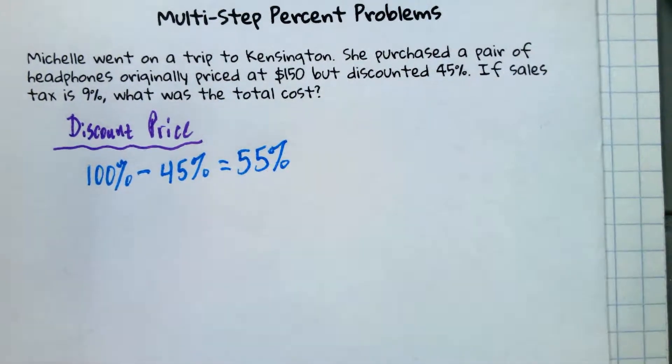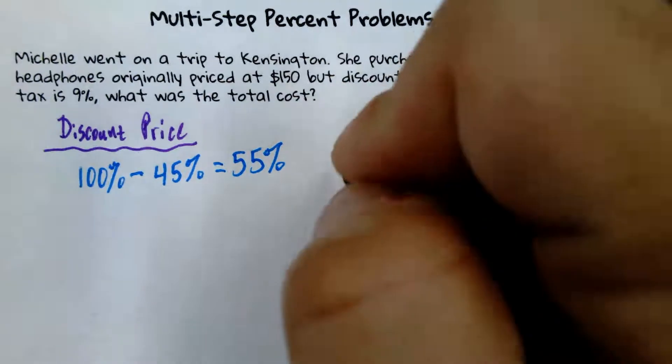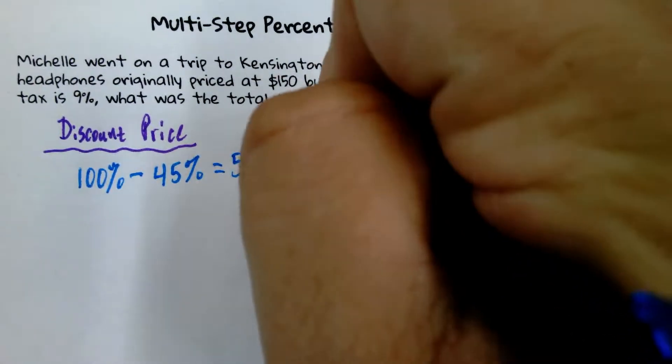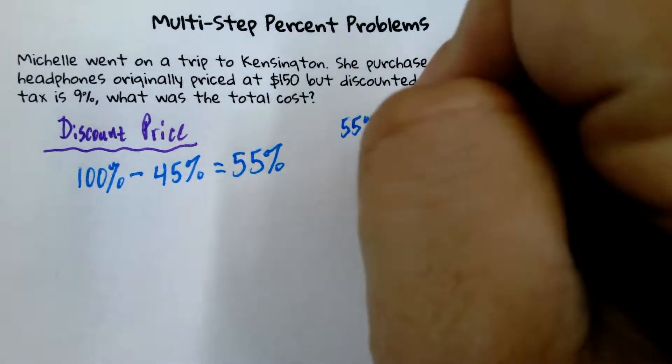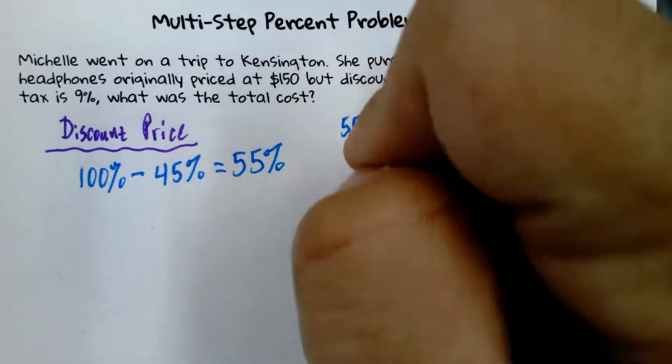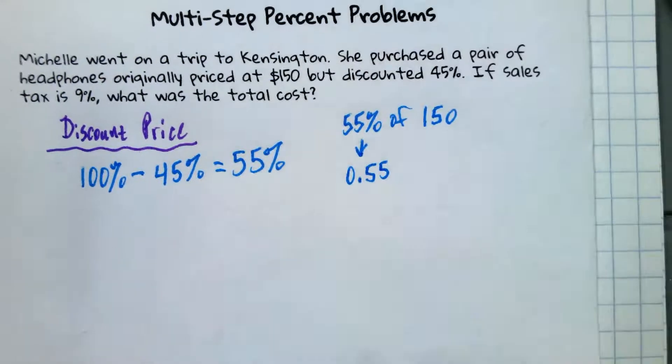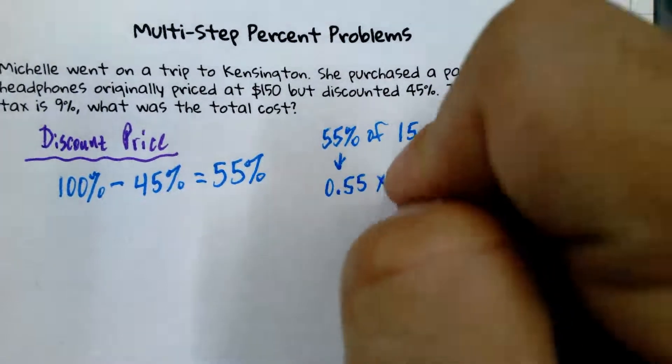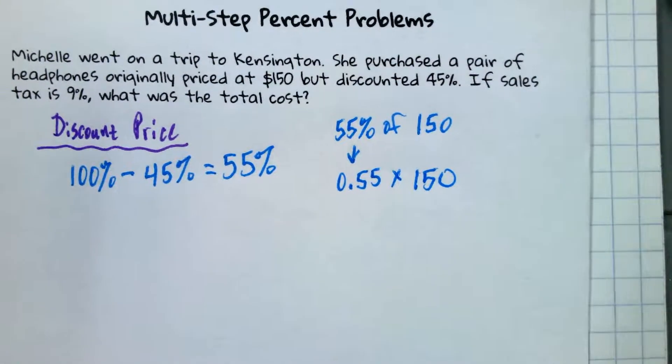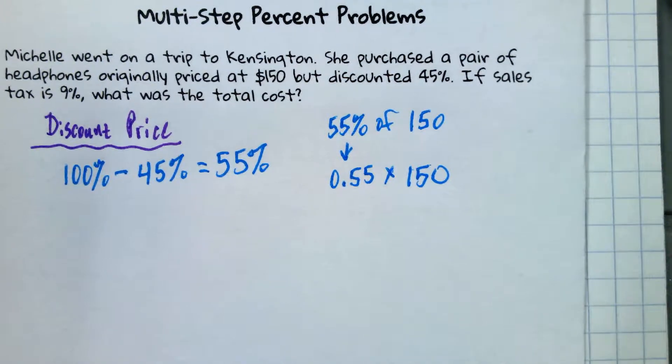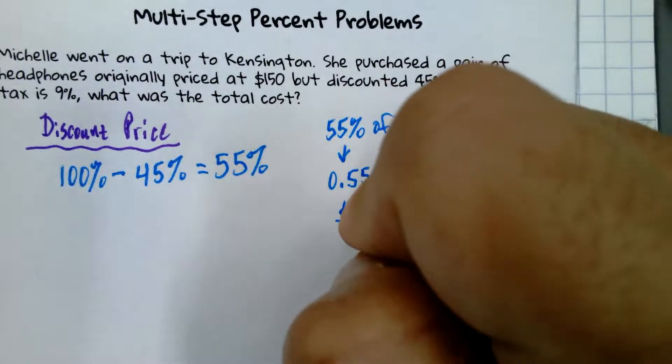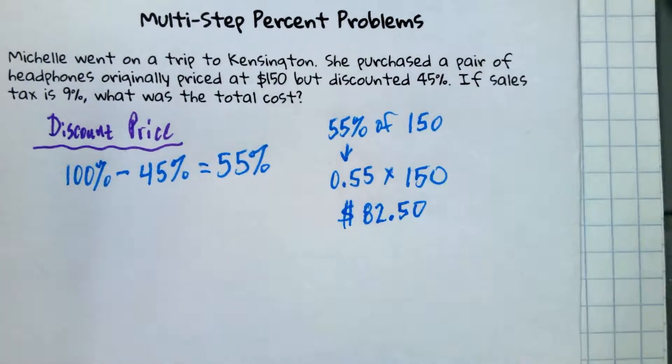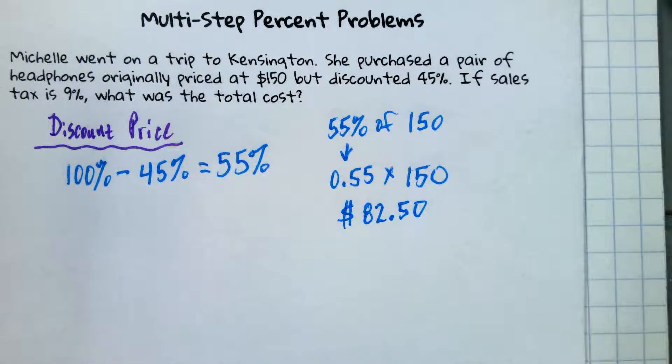So basically, the price with the discount is 55% of the original price. So we want 55% of 150. Let's convert this to a decimal. Of tells us to do what mathematically? Multiply. Let's do 0.55 times 150. So that's $82.50.